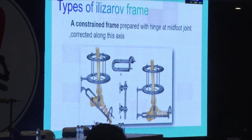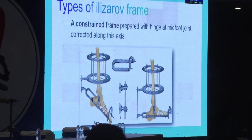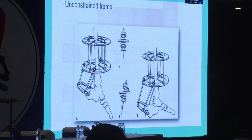Here we use two types of external frames: the constrained frame and the unconstrained frame. In the constrained frame, you can see the hinges at the ankle joint. These hinges are placed in the axis of rotation so that deformity correction occurs along the axis of rotation. In the unconstrained frame, the normal joints themselves act as a hinge.